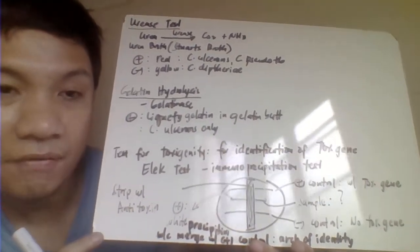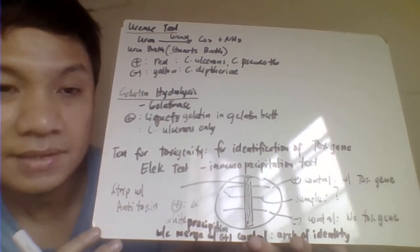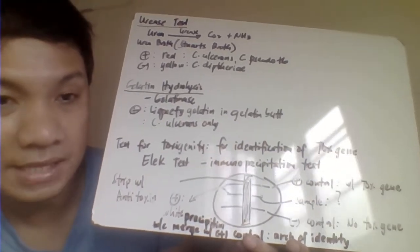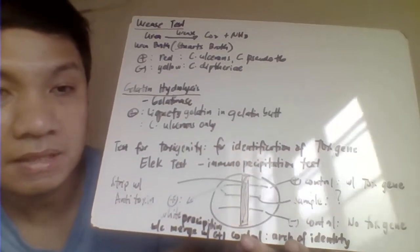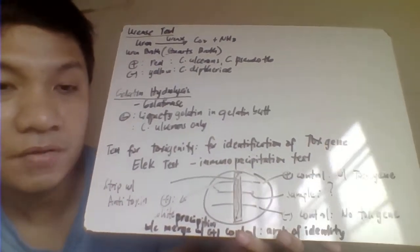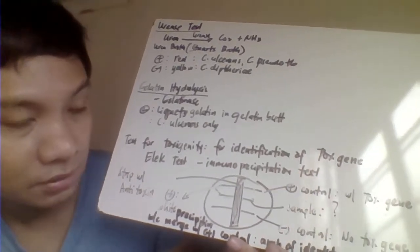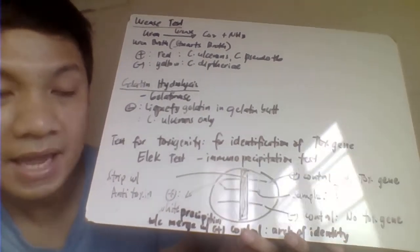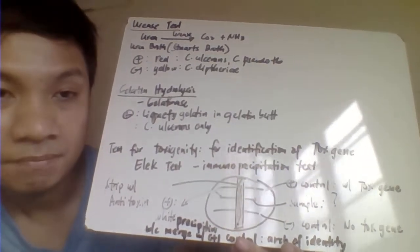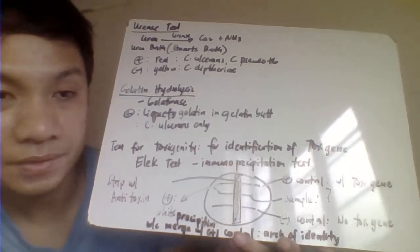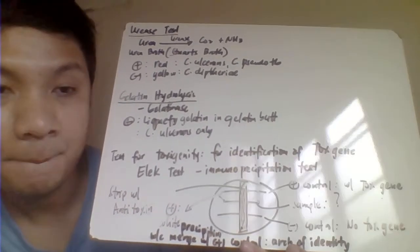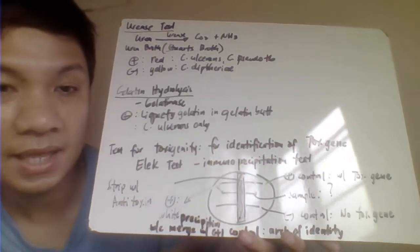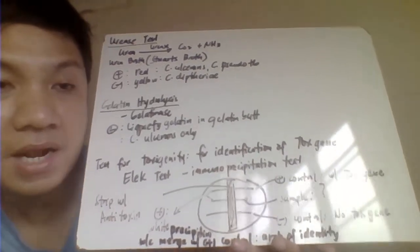In the ELEK test, we detect the tox gene as our antigen using antitoxin as our antibody. A positive result shows white precipitin formation. Procedure: bacterial inoculum positive for toxin is streaked, with the sample in the middle and negative control on the other side. A filter paper strip containing antitoxin is placed in the center. After incubation at 35 degrees for 18–24 hours, positive control produces white precipitin, and if the sample also contains toxin, it produces white precipitin that merges with the positive control forming an arch of identity.